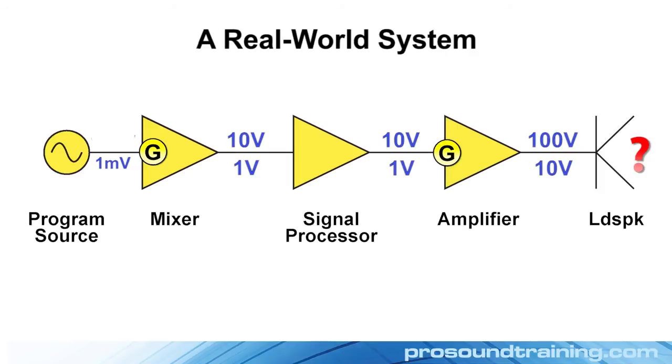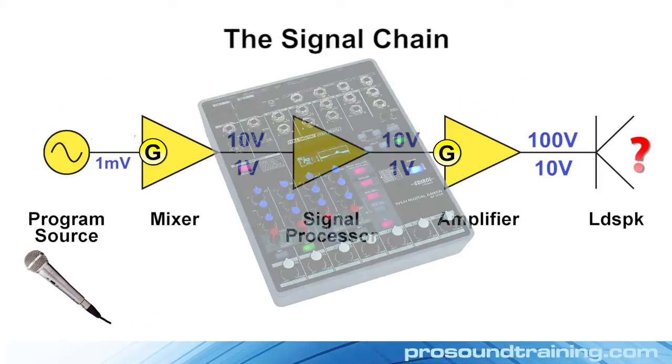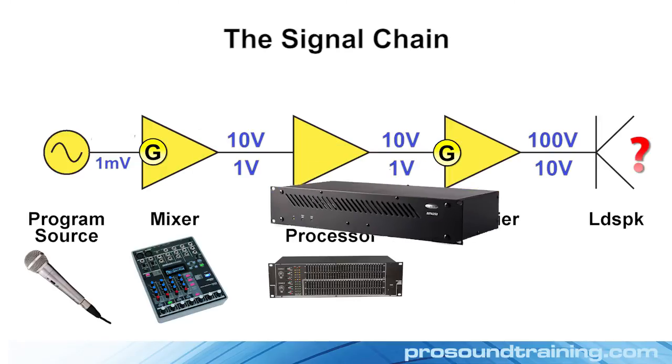Let's review. We have a program source that can be almost any level. There's an input gain stage for the mixer to bring that level up to line level. We stay at line level through the signal processing stages, where maybe some equalization and other signal processes are added. And then the amplifier supplies the appropriate amount of gain to reach the target sound pressure level in the audience. That's pretty much how all sound systems work, and you can substitute the components of your choice and apply this universal gain structure philosophy.